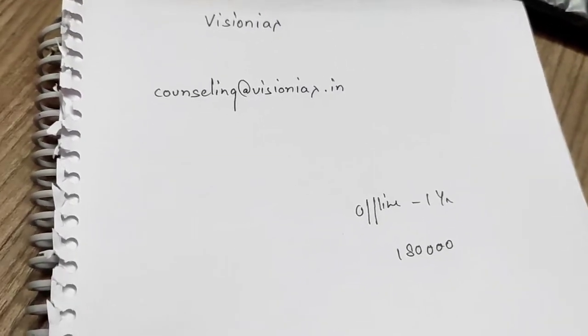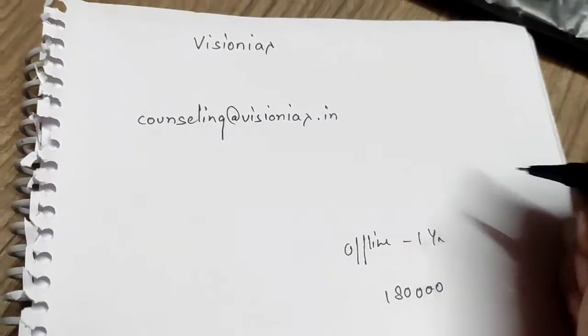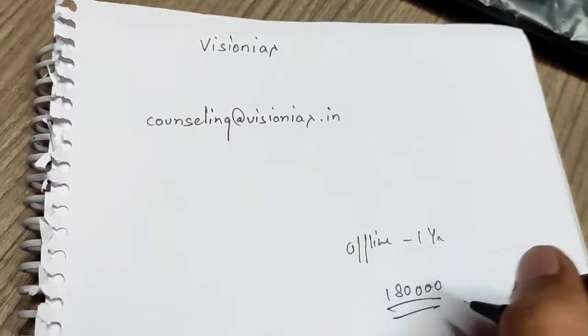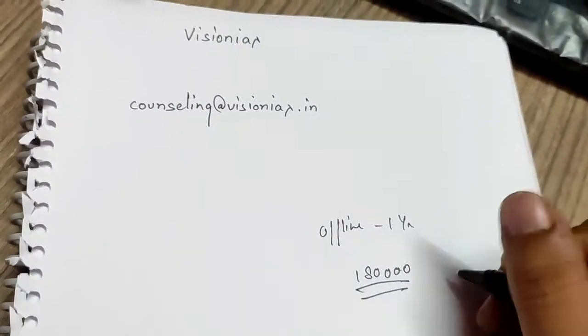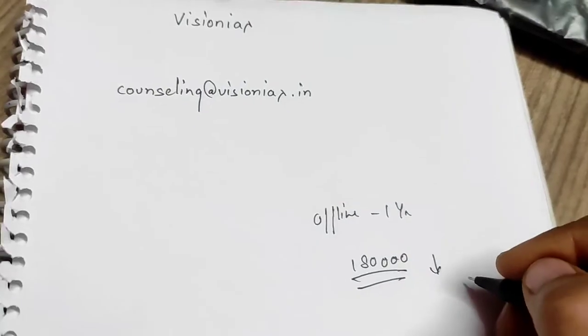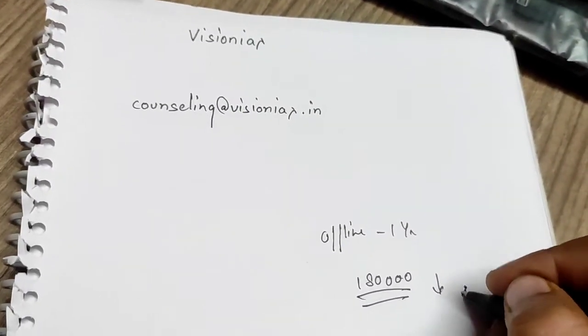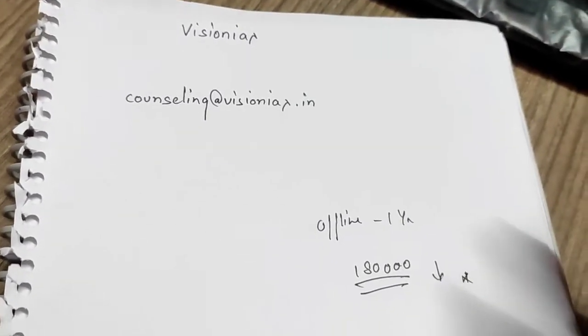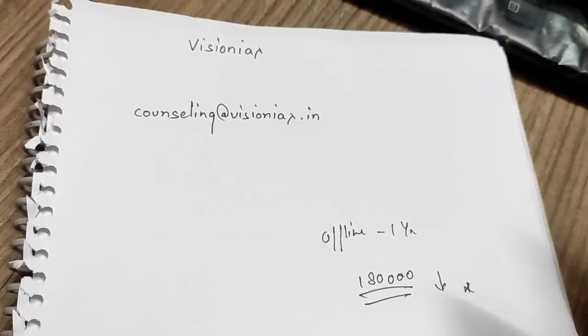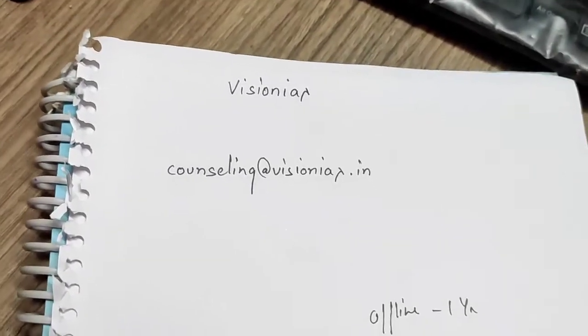I asked them—I told them I am middle class so I cannot pay 1 lakh 80 thousand. Please reduce the fees. Then the person told me that they didn't give me any concession.